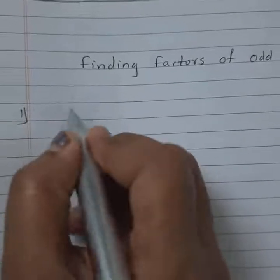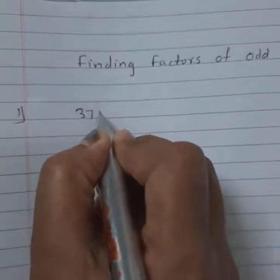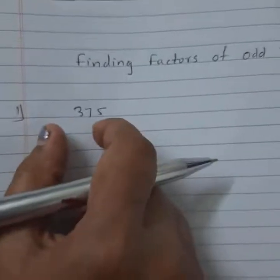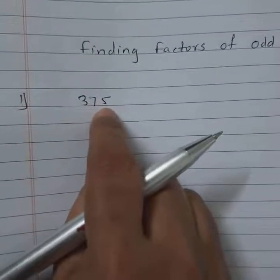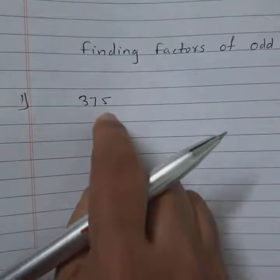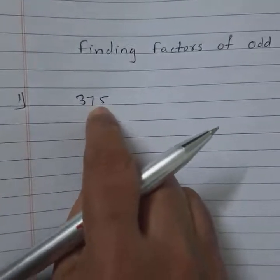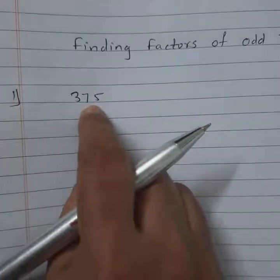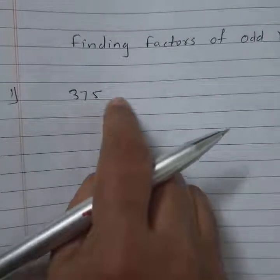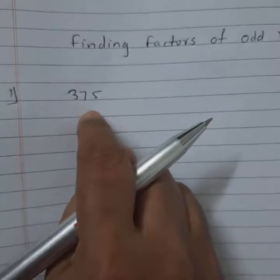Here I take one example: 375. I want to divide this number. Observe the last two digits, 75, or the last digit, 5. 75 and 5 are divisible by 5, so this number is divided by 5.